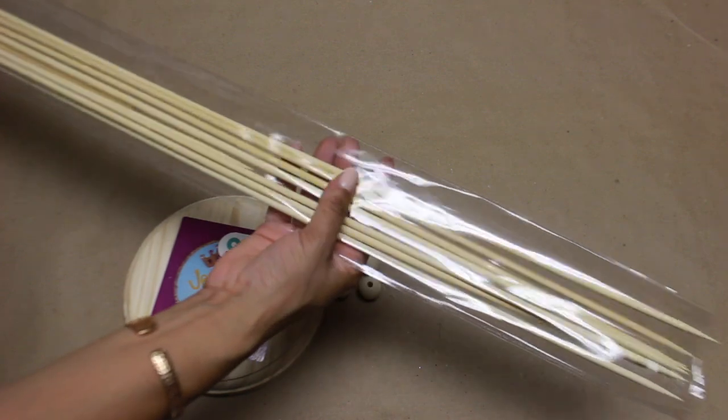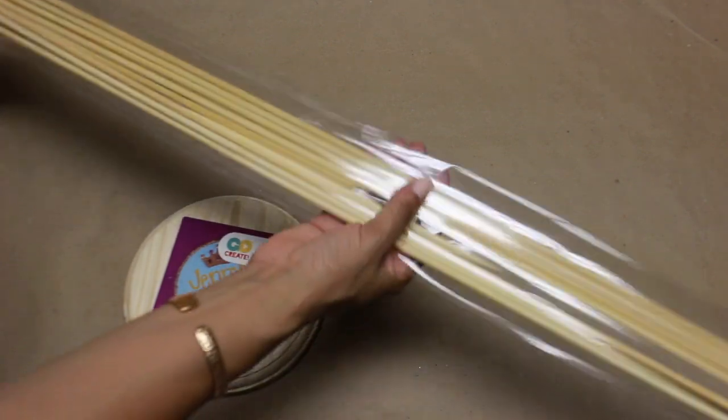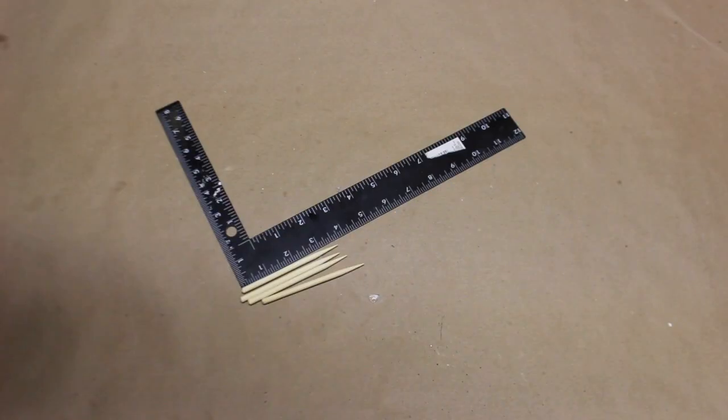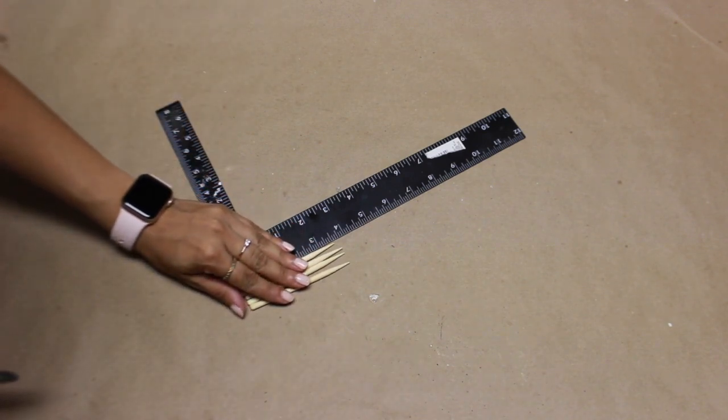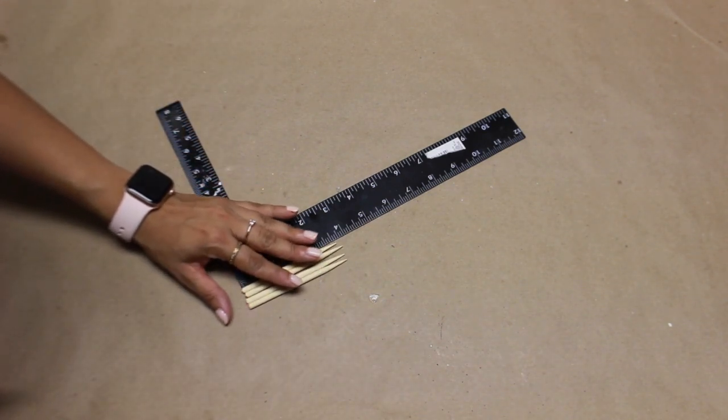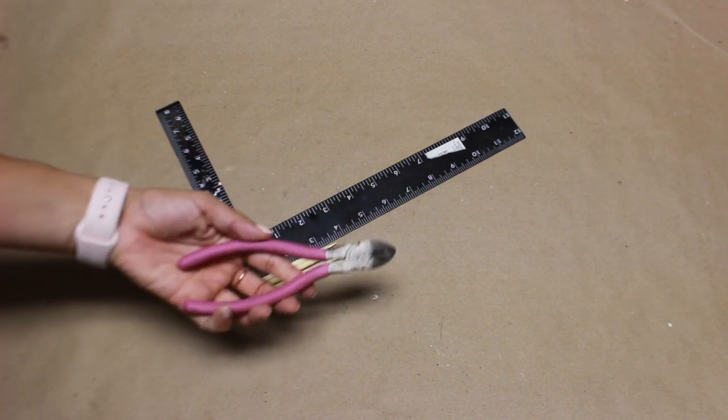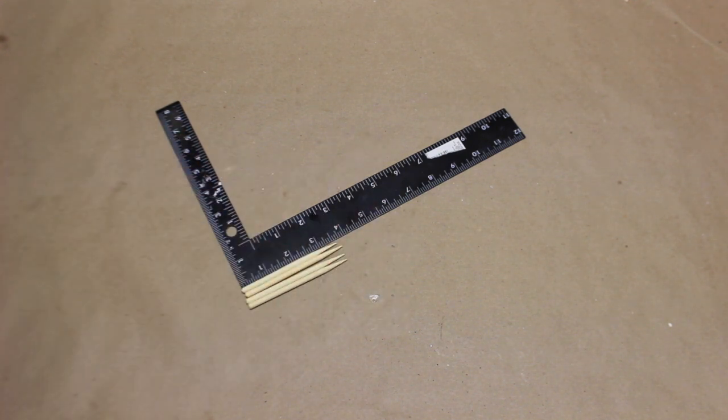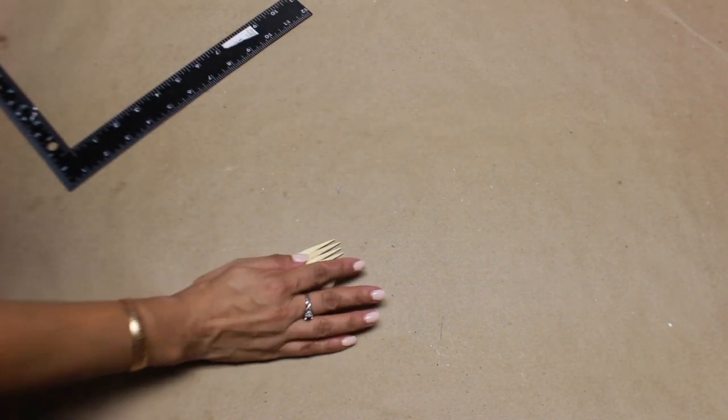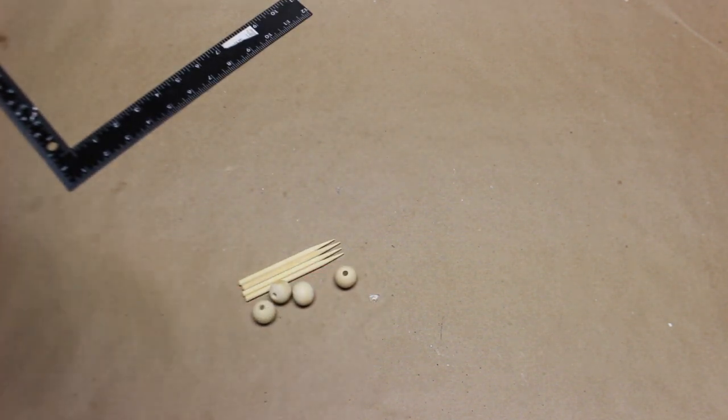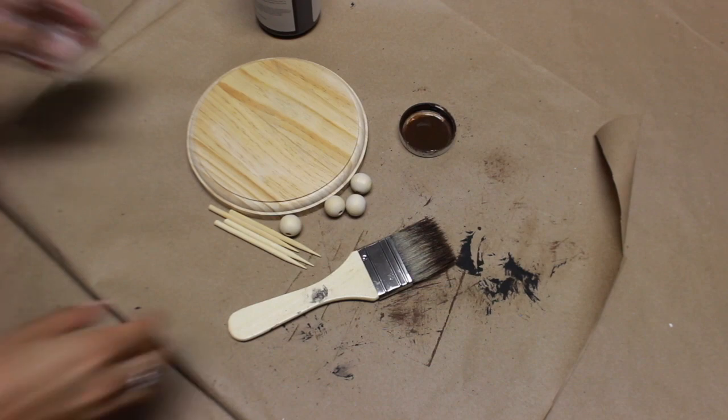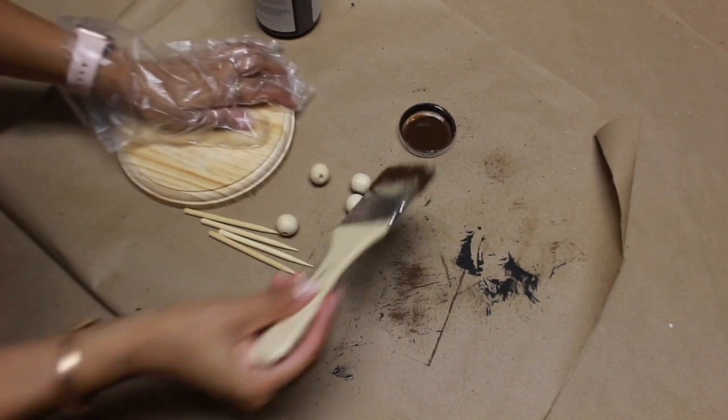So I also have these long skewers from the Dollar Tree that I'm going to use as well. So this next part is important. You're actually going to need eight of these little skewers. But as you can see, they're a little bit under four inches. And I am using these sharp ends because that part is going to go directly into the wooden bead.